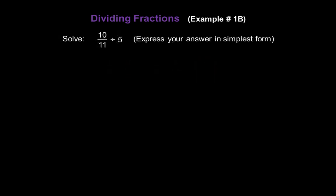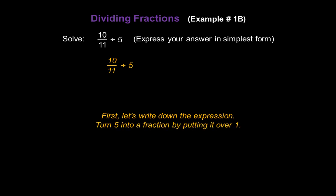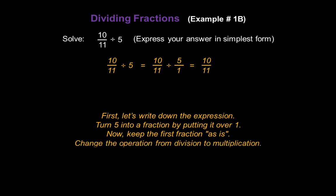Let's solve 10 over 11 divided by 5. First, let's write down the expression. I want both numbers to be fractions, so I'll turn 5 into a fraction by putting it over 1. Rewriting the problem as 10 over 11 divided by 5 over 1. Now, keep the first fraction as is — rewrite 10 over 11. Change the operation to multiplication. And flip the second fraction: 5 over 1 becomes 1 over 5.